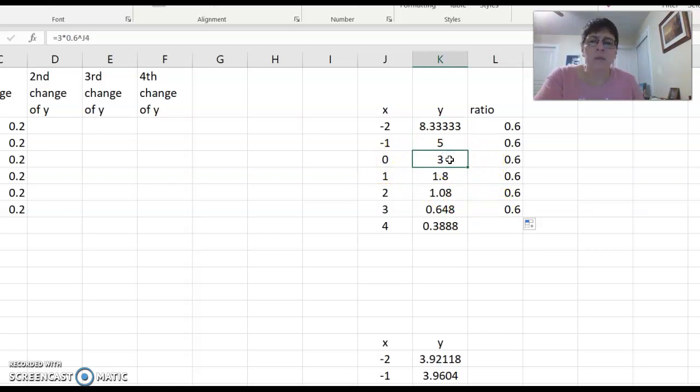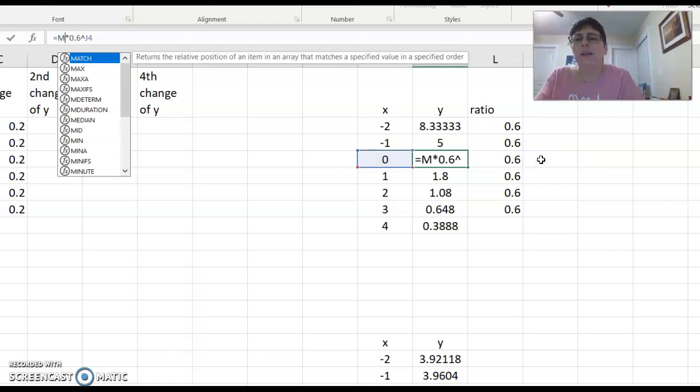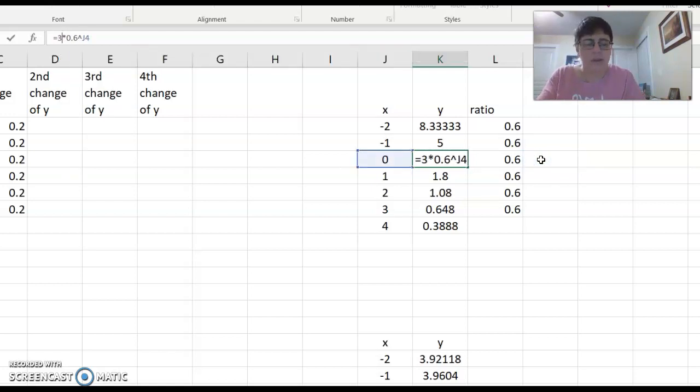That ratio is the base, and right where it's zero, this number right here is the number out front. We call it just the constant. So in this case, it's three times. The formula itself will look like y equals three times 0.6 raised to the x power.